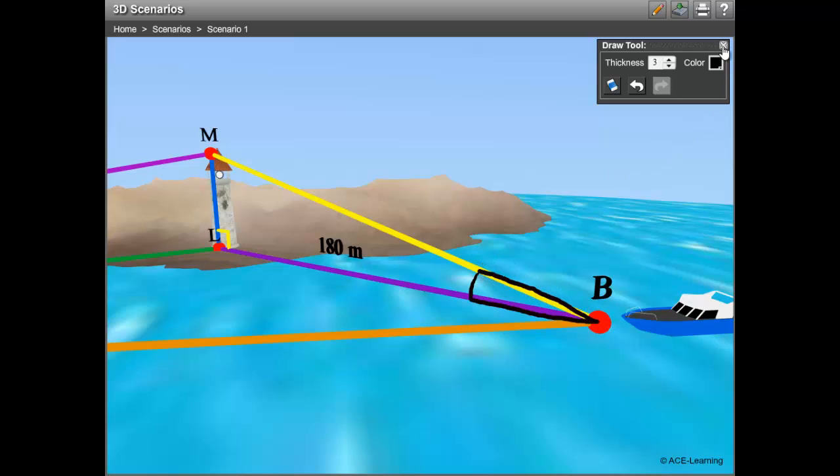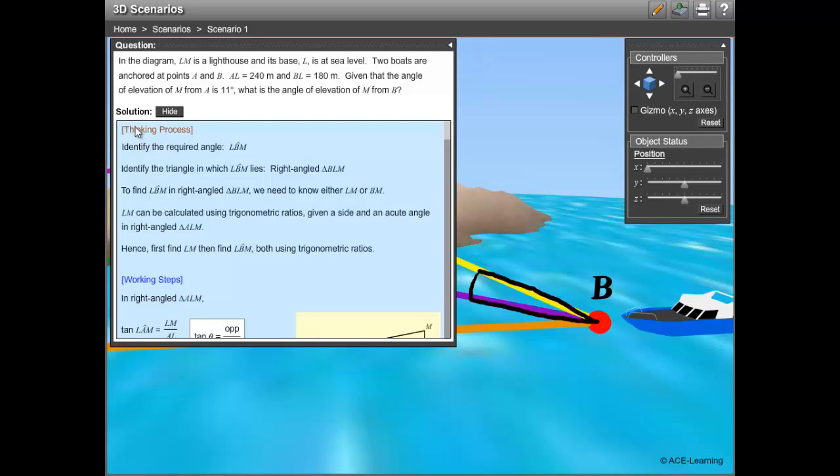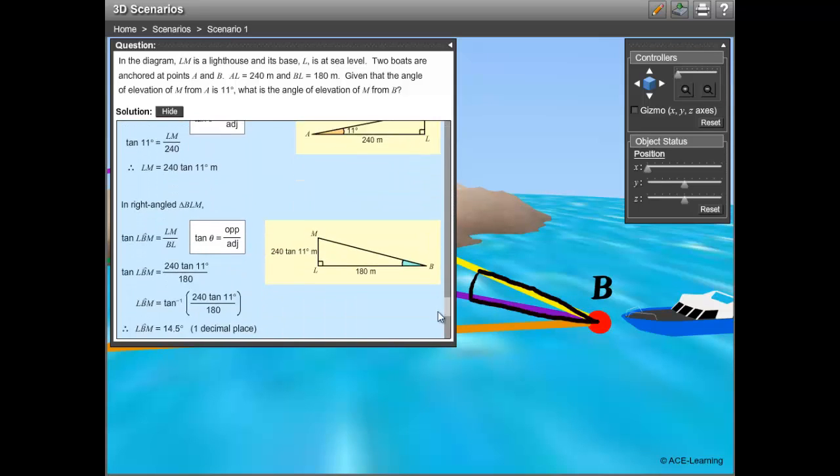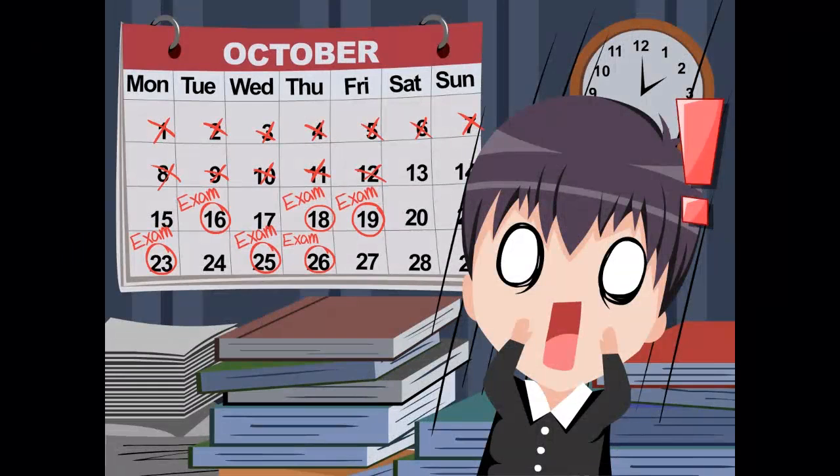Now for the solution. Here, there is a unique feature which other systems do not have: Thinking process. Before any attempts on problem solving, the thinking process is crucial. Students need to understand the problem, identify what they are required to find, and manipulate the given information to solve the problem.